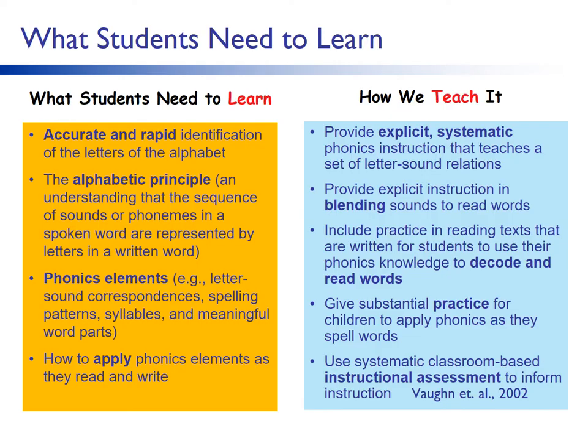Research has shown that for students to be effective decoders and readers, they need to rapidly and accurately identify letters of the alphabet and understand the alphabetic principle — that sounds of letters or phonemes are represented by letters or graphemes. Students also need to be proficient in phonics elements such as letter-sound correspondences and word parts, and apply these phonics elements while reading and writing. Reading researchers recommend teaching these elements explicitly and systematically, providing plenty of practice to achieve mastery, and using curriculum-based assessment measures to inform instruction and monitor progress.